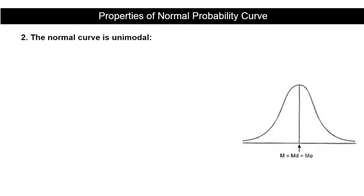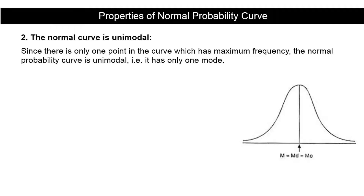The second property is that the normal curve is unimodal, meaning it has a single mode. There is only one point in the curve which has maximum frequency, and that point is at the center. So the normal probability curve is unimodal — it has only one mode.